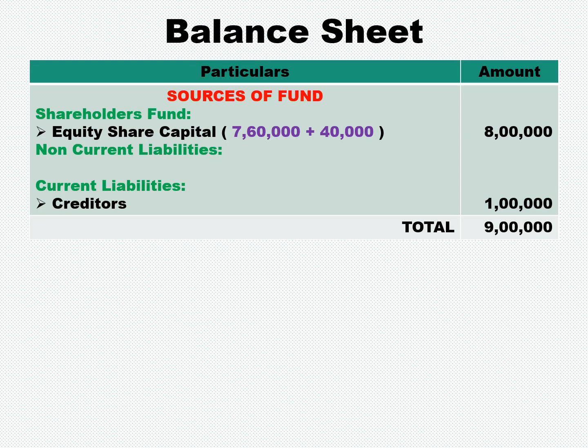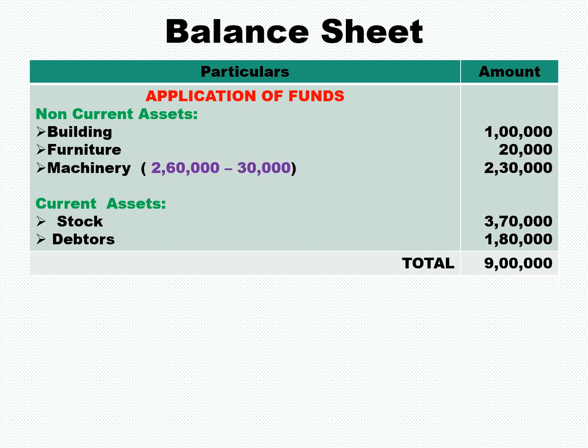Reconstructed balance sheet — liability side: new equity share capital is 7 lakh 60,000 plus 40,000 shares issued to debenture holders, giving total equity share capital of 8 lakh. Non-current liability: debentures are now nil. Creditors: 1 lakh. Total: 9 lakh. Asset side: land and building 1 lakh, furniture 20,000, machinery 2 lakh 60,000 minus depreciation of 30,000 equals 2 lakh 30,000, stock 3 lakh 70,000, debtors 1 lakh 80,000. Total balance sheet: 9 lakh.